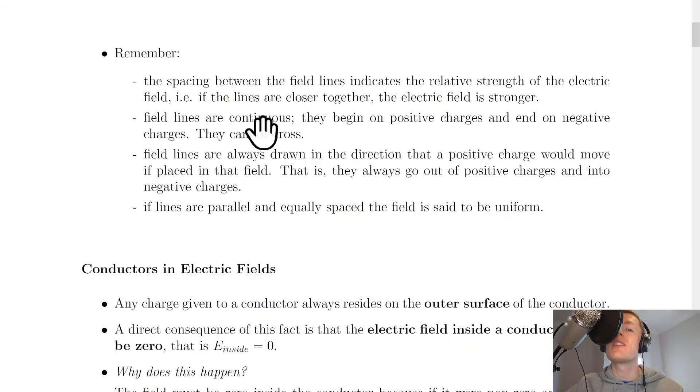Next it says that field lines are continuous, they begin on positive charges and end on negative charges, and they cannot cross. So you should never draw field lines crossing over. Next it says the field lines are always drawn in the direction that a positive charge would move if placed in that field. That is, they always go out of positive charges and into negative charges. And lastly, if lines are parallel and equally spaced, the field is said to be uniform, as in the case for the two charged parallel plates.